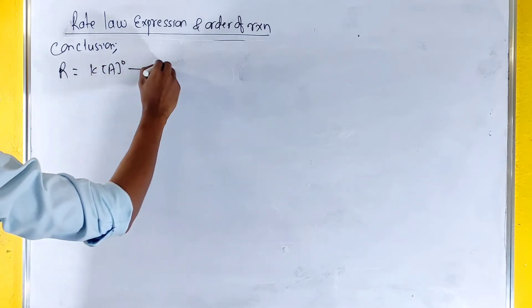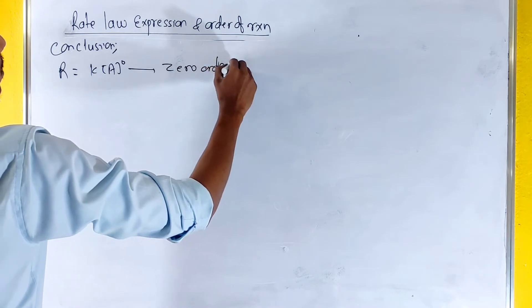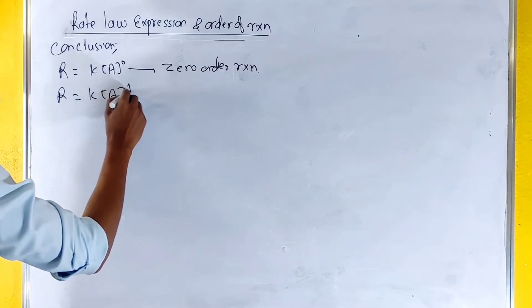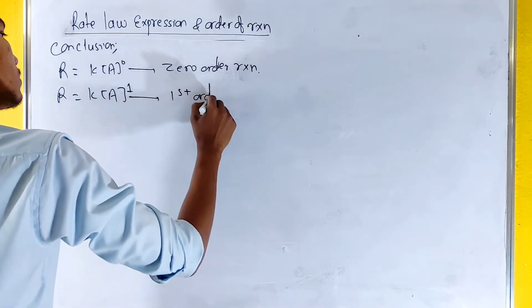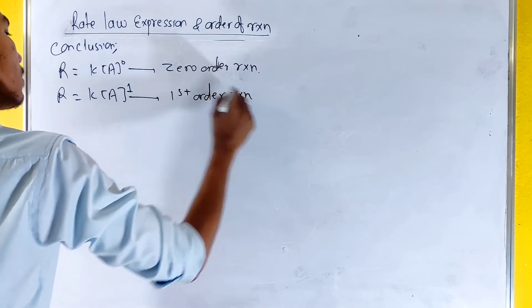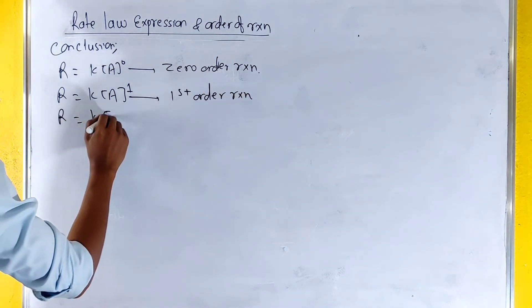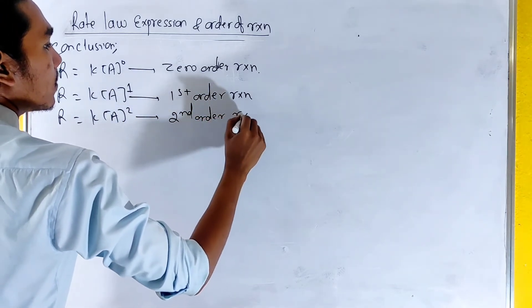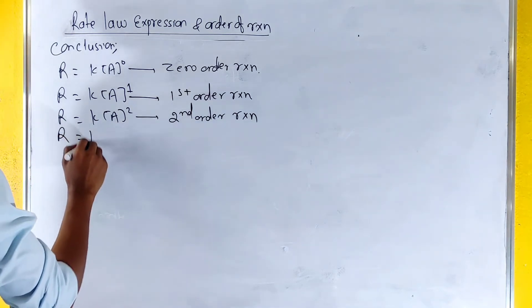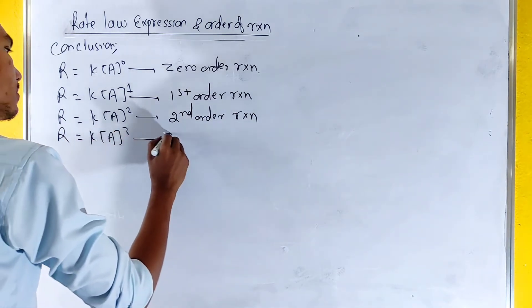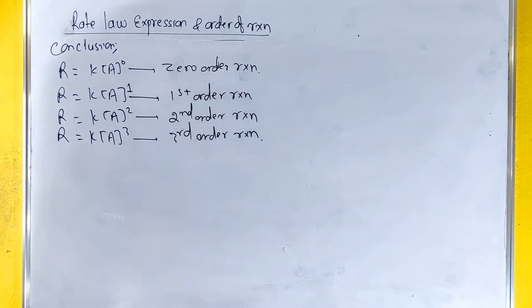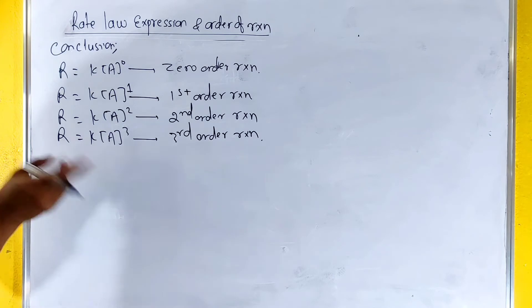Summary: zero order reaction — r equals k. First order reaction — r equals k times A. Second order reaction — r equals k times A squared. Third order reaction — r equals k times A cubed.